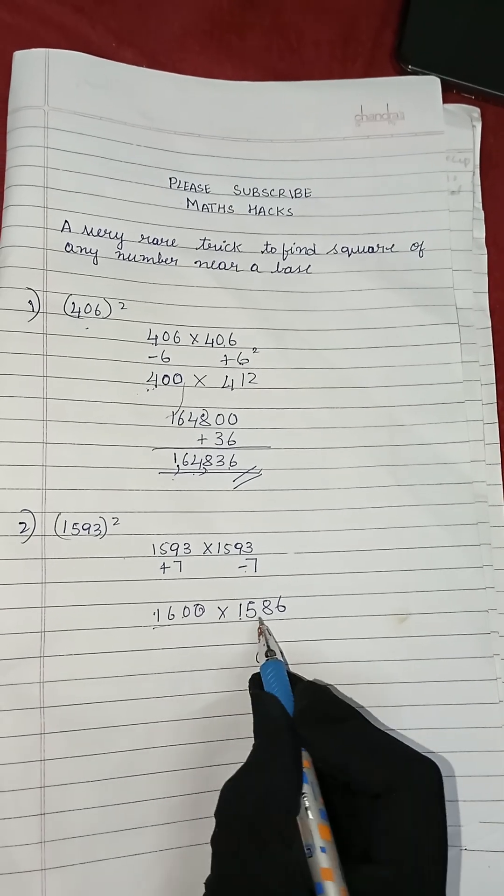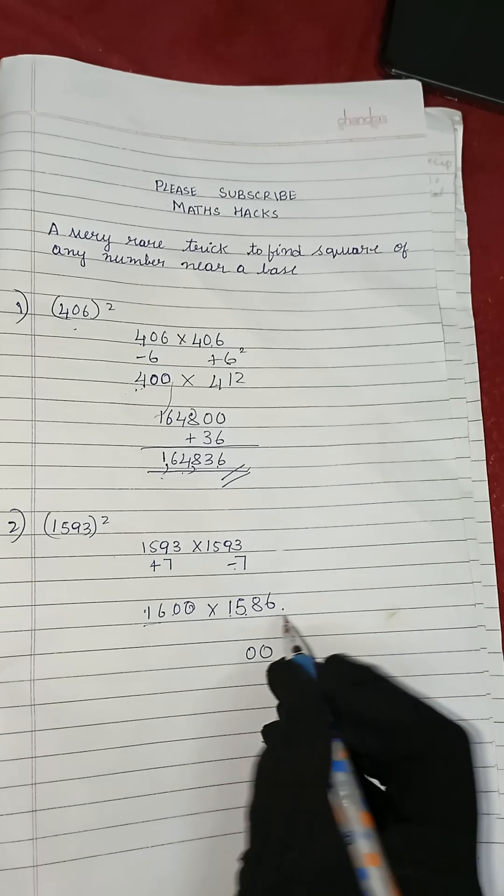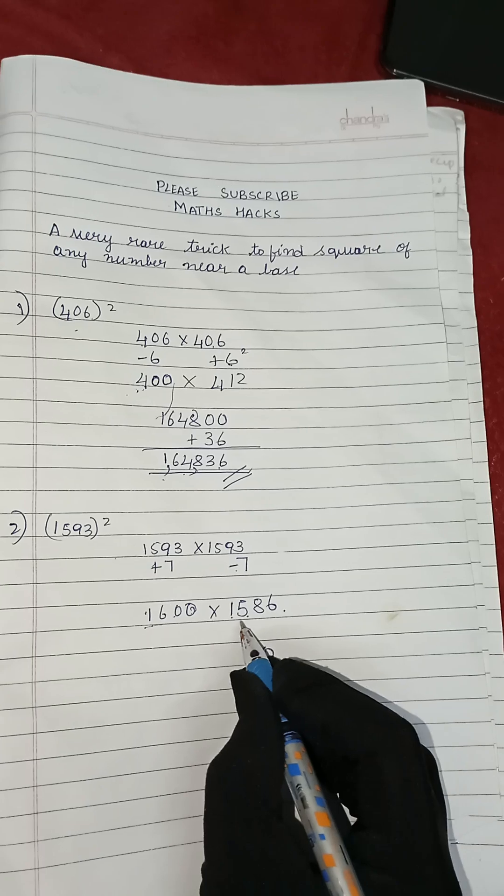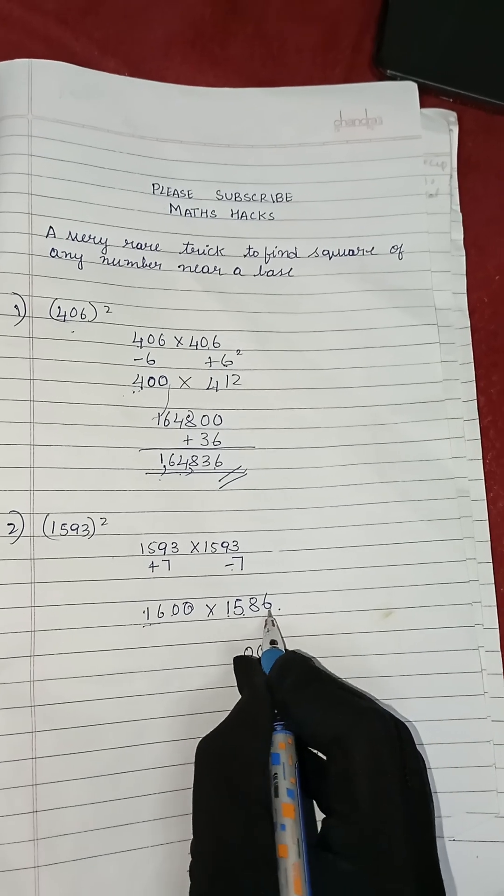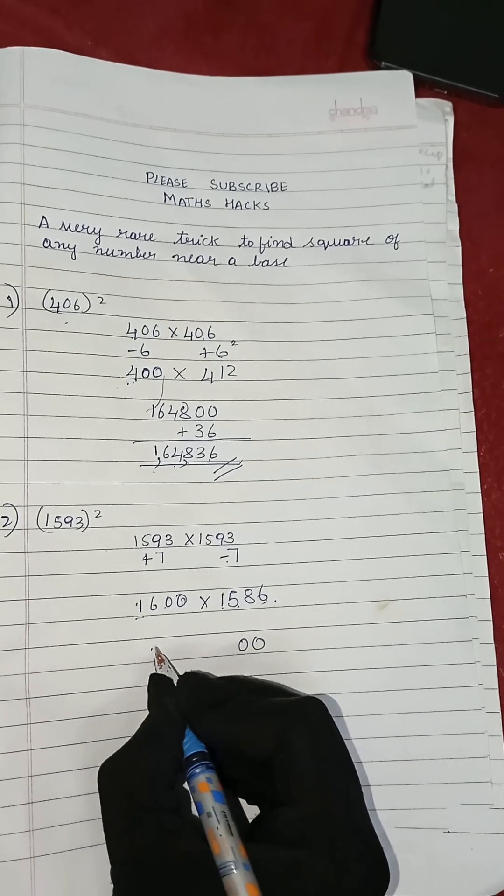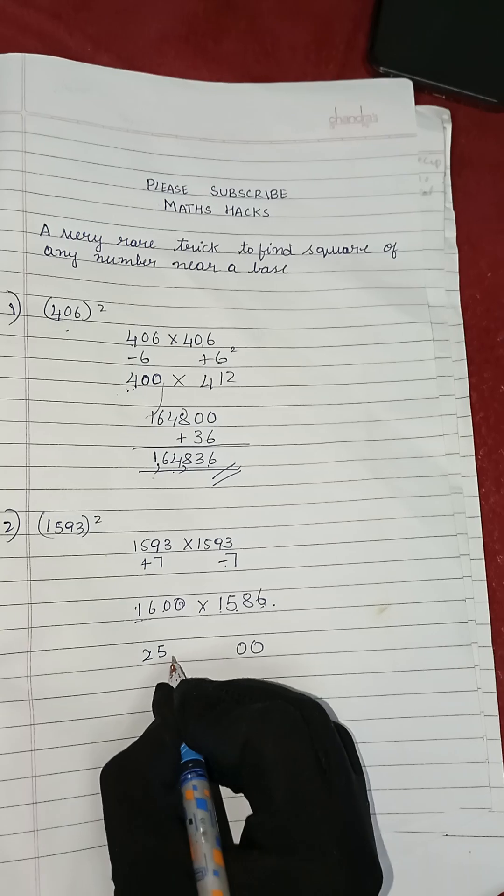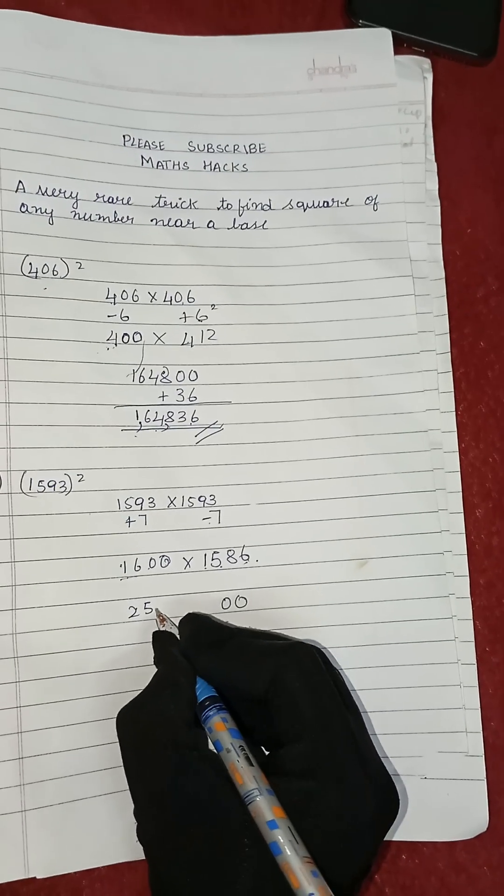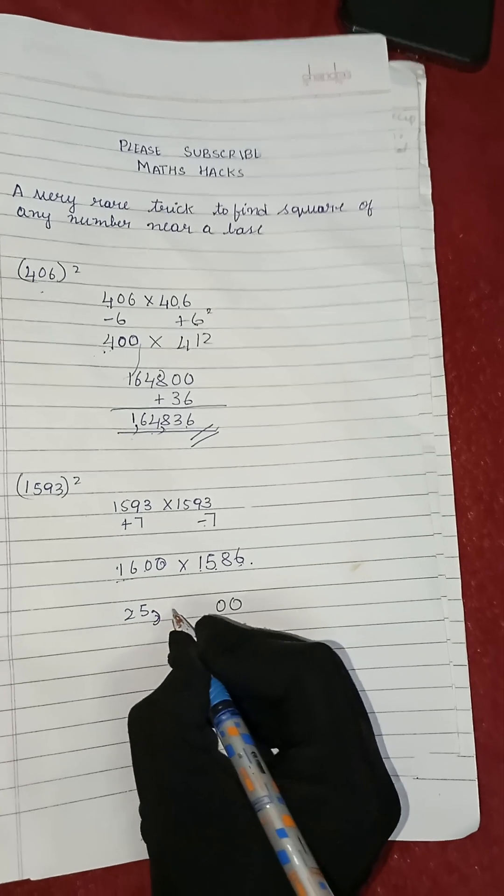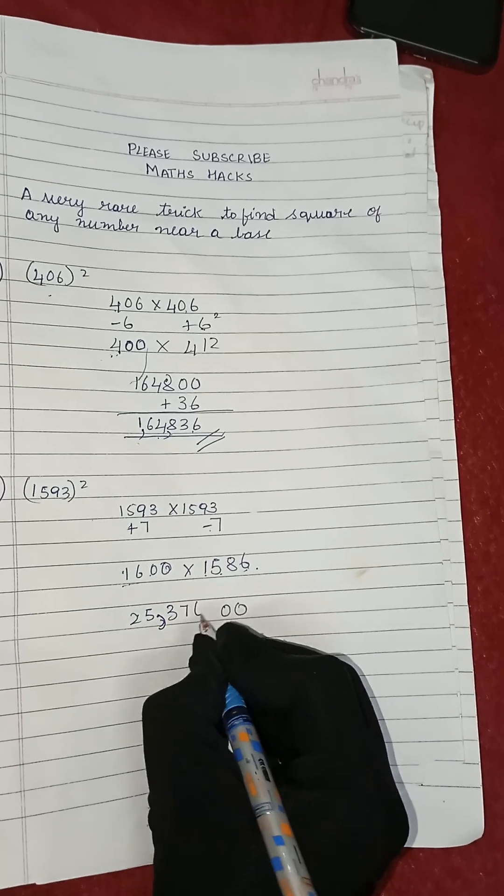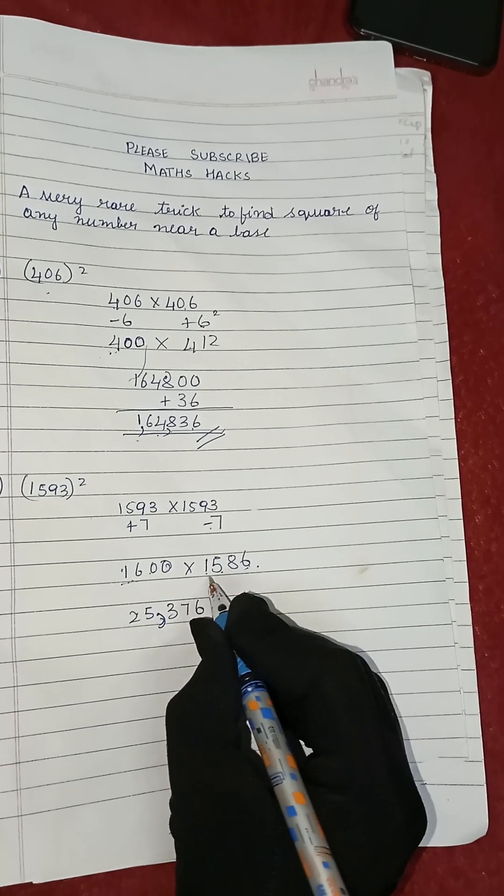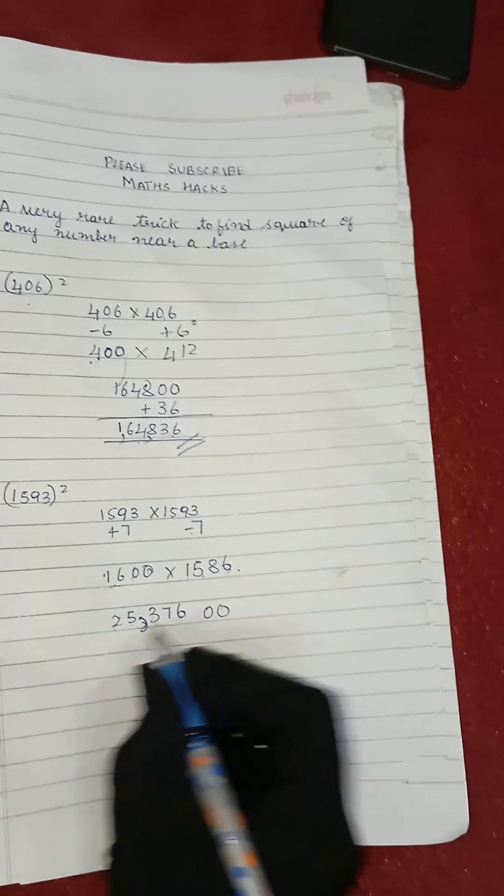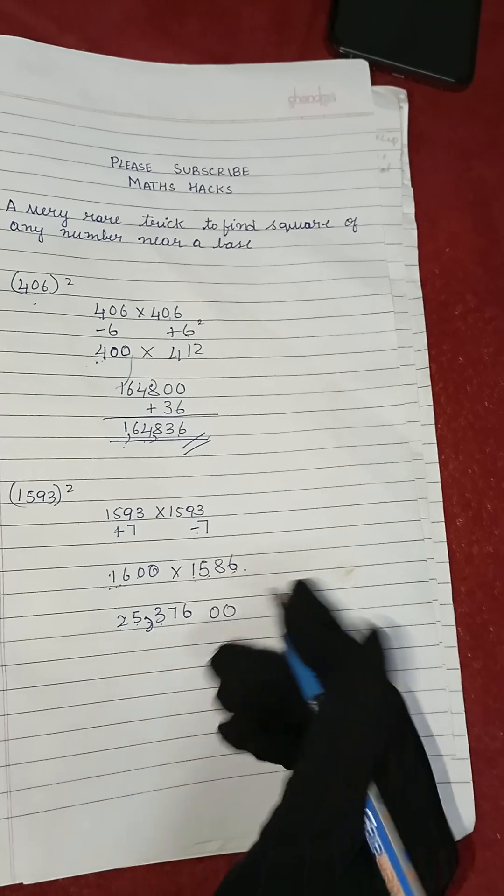Now we will multiply 16 with 1586. If we multiply 16 into 1586, we will get 25,376.